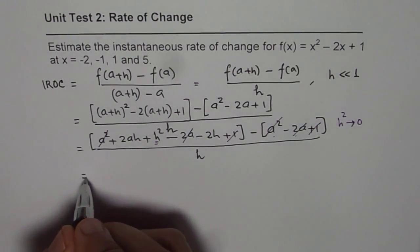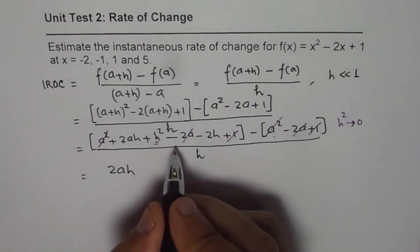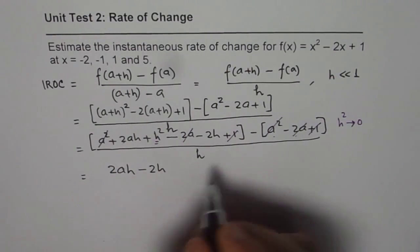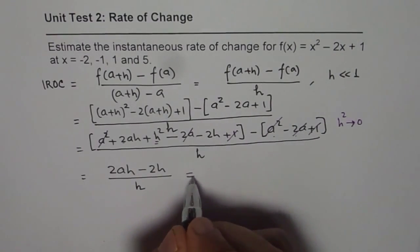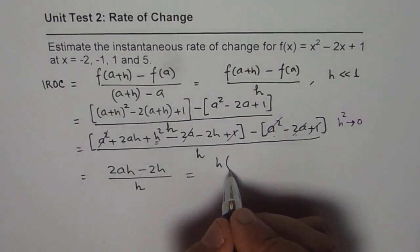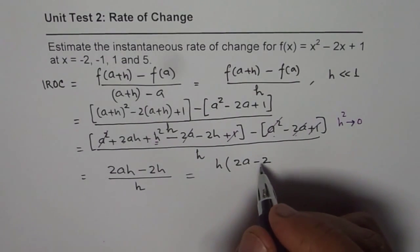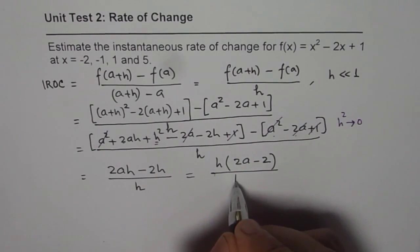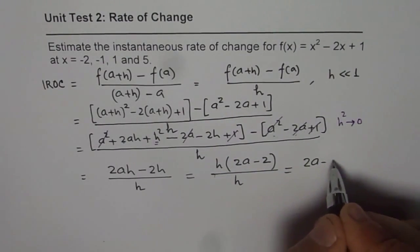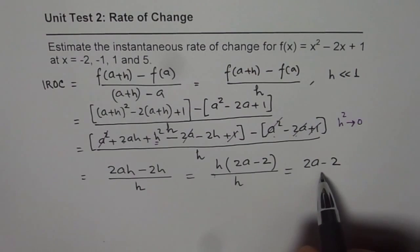We are left with 2ah and minus 2h divided by h. I can factor out h and you get 2a minus 2 over h, and that gives us 2a minus 2. So this is a general expression for rate of change at any point a on this function.